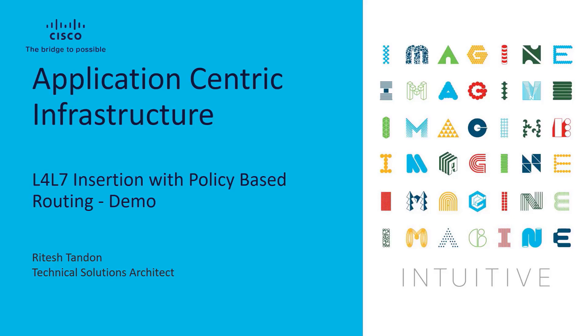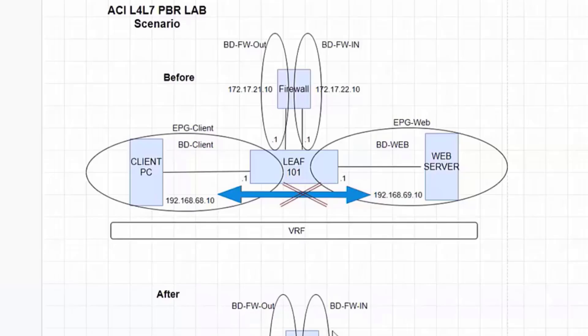Hello, my name is Ritesh Tandan and I'm a technical solutions architect at Cisco. Today in this demo, we are going to see how we can leverage Cisco's ACI SGM solution to dynamically insert a L4/L7 device in the data path of two workloads on the same ACI fabric. The scenario is called L4/L7 insertion with PBR — policy-based routing.